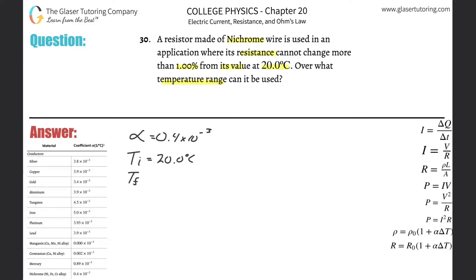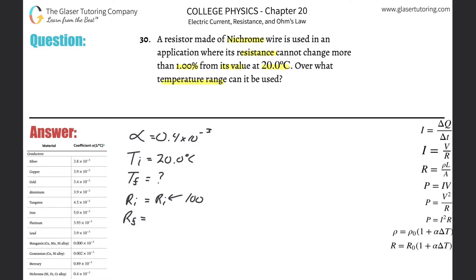The final temperature — we don't know, so put a question mark. The initial resistance — we don't know either. But what I do know is the relationship between initial and final resistance. For example, pretend the initial resistance is 100. The problem says the resistance cannot change by more than 1%. If I start with 100 and it cannot change by more than 1%, what are the possible values of the final resistance?